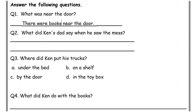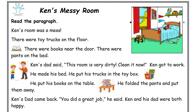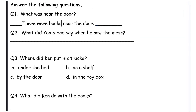Question 3: Where did Ken put his trucks? A) Under the bed. B) On the shelf. C) By the door. D) In the toy box. The hint word is trucks. He put his trucks in the toy box. So we will put a tick on D, in the toy box.